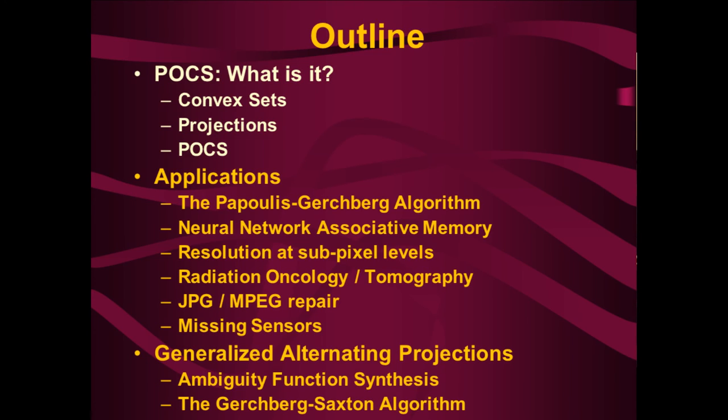We'll look at applications of generalized projection onto non-convex sets for the specific case of ambiguity function synthesis and the Gerchberg-Saxton algorithm. The ambiguity function synthesis has to do with synthesizing a radar signal that has certain properties for detecting the velocity and position of a target aircraft. The Gerchberg-Saxton algorithm is a technique used to determine phase given magnitude, and variations of it were used in the correction of the initial misfocusing of lenses on the Hubble telescope.